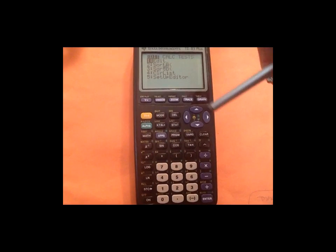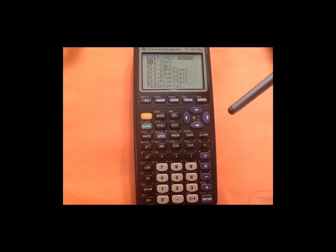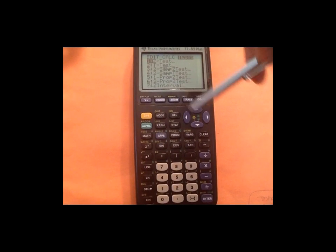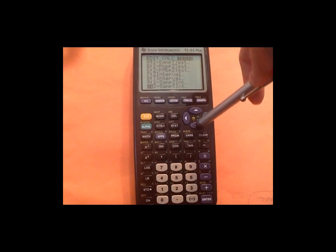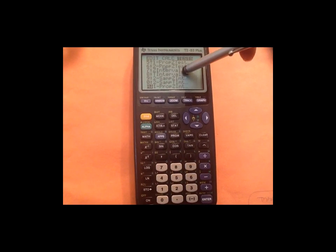So I want to do a confidence interval. I hit my stat key. We go over here in this menu to test. So I got to do my arrow key over to tests. Now we see all these things called test. If we go all the way to the bottom, we start to see the interval options.